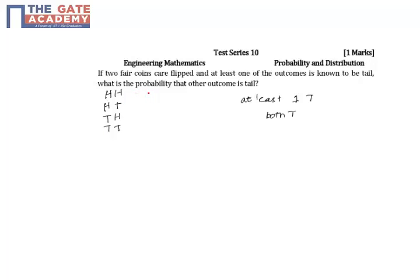Here it is given as a fair coin, so they will be of equal probability like one by four, one by four, one by four, and one by four. All of them have equal probability.